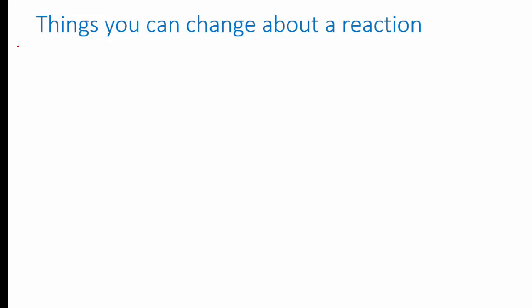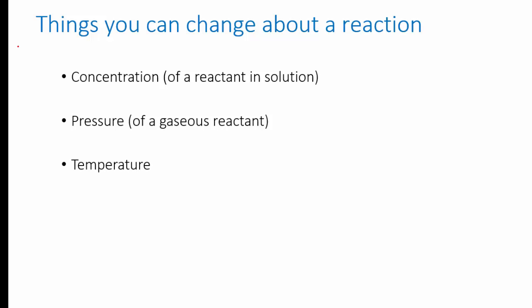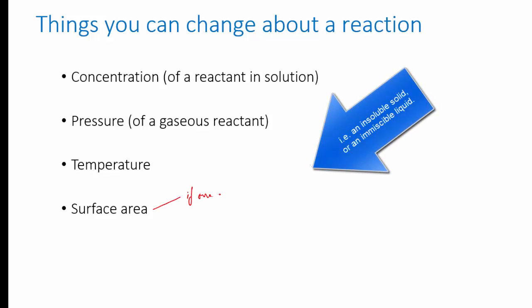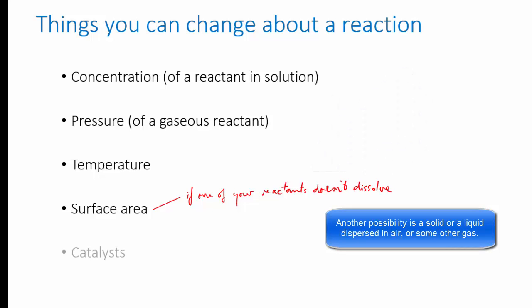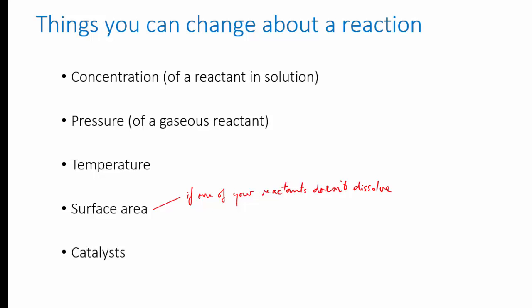As long as you aren't changing the reaction itself, the factors you can play around with are the concentration of a reactant in solution, the pressure if you've got a gaseous reactant, the temperature of the reaction, the surface area if you've got a solid reactant or if you have two immiscible liquid reactants like an oil and water that need to be shaken together. The surface area between those two has an effect on the rate. And the final thing is the presence of a catalyst.